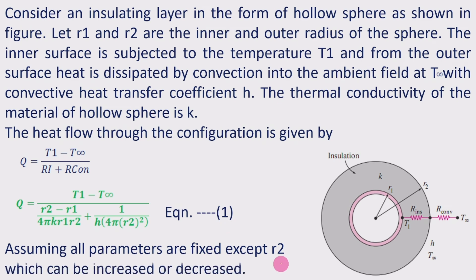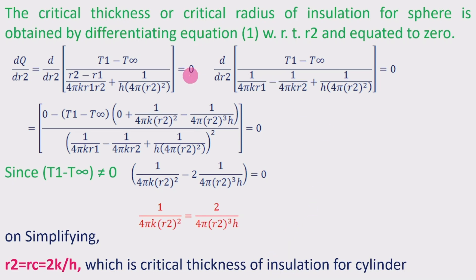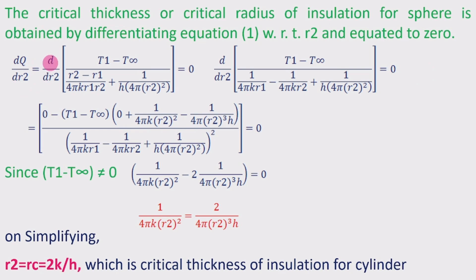Assuming all parameters are fixed except R2, which can be increased or decreased — T1, T∞, R1, K, and H are all fixed — only R2 is varied in order to get the maximum heat transfer. The critical thickness or critical radius of insulation for the sphere is obtained by differentiating Equation 1 with respect to R2 and equating to zero.